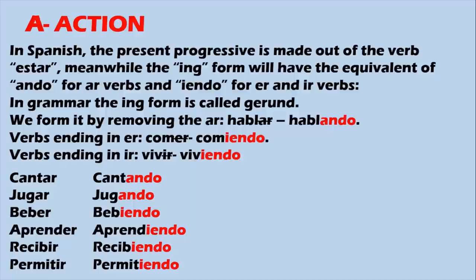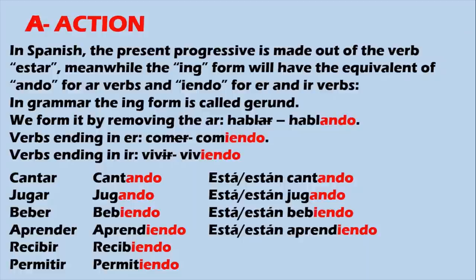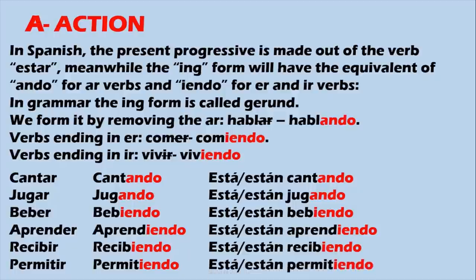Now let's see how these work together as present progressive. 'Está cantando' — he or she is singing. 'Están cantando' — they are singing. 'Está jugando' — he or she is playing. 'Están jugando' — they are playing. 'Está bebiendo' — he or she is drinking. 'Están bebiendo' — they are drinking. 'Está aprendiendo' — he or she is learning. 'Están aprendiendo' — they are learning. 'Está recibiendo' — he or she is receiving. 'Están recibiendo' — they are receiving. 'Está permitiendo' — he or she is allowing somebody. 'Están permitiendo' — they are allowing.